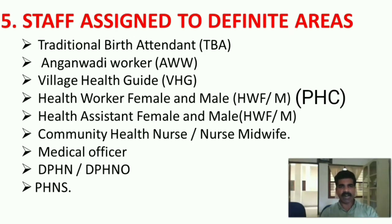The fifth concept is staff assigned to definite areas. Traditional birth attendant (TBA), lady health worker (LHW), and village health guide are peripheral health workers, also known as village health workers. They are voluntary workers who support the community health nursing team.